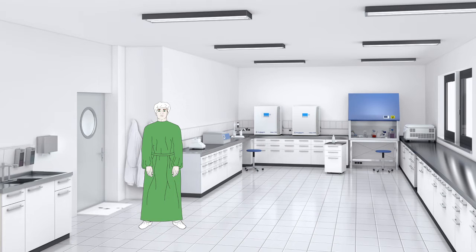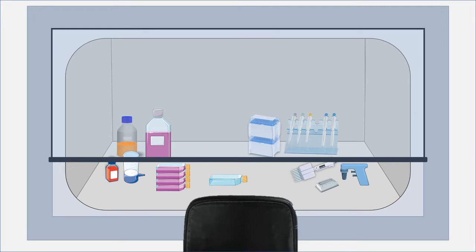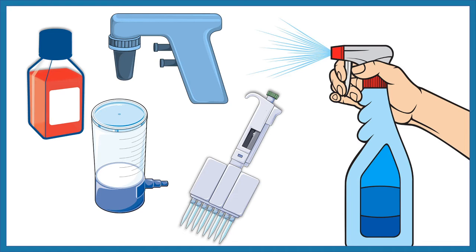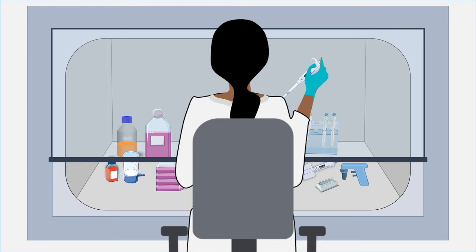Certain norms must be followed in a cell culture lab, such as wearing a lab coat at all times. If you are culturing infectious or serious material, you should have an additional layer of protection with a proper PPE kit. The hood depicted here is a classical BSL-2 hood (Biological Safety Level 2); BSL-3 and BSL-4 hoods look very different. All items placed in the hood must first be sprayed with alcohol to ensure they are contamination-free. Wearing gloves and proper protective equipment prevents contamination and protects from biohazards.